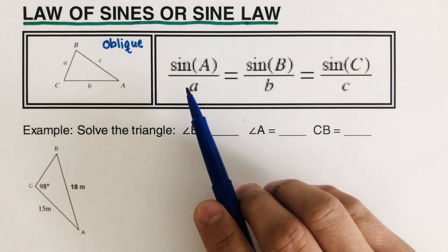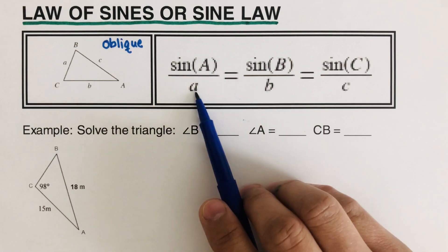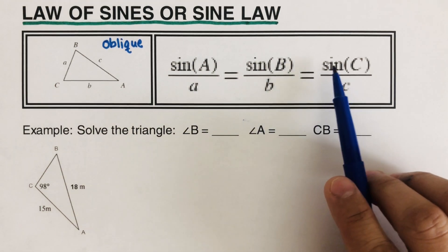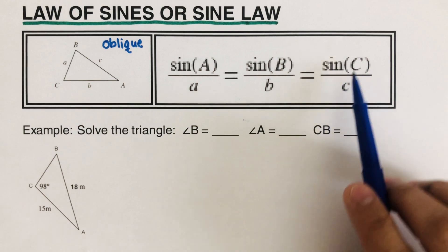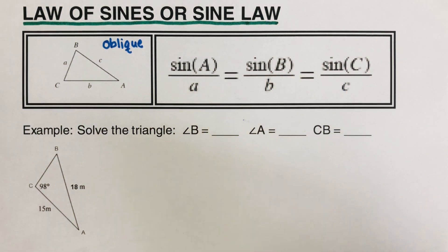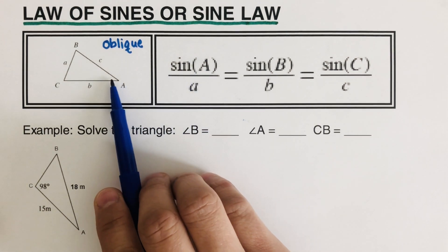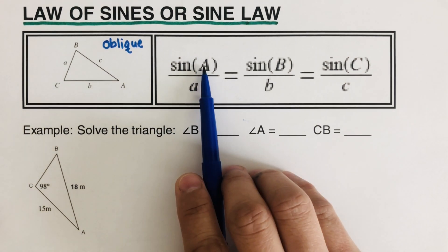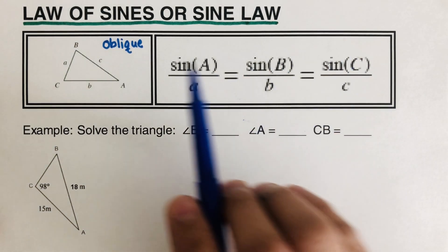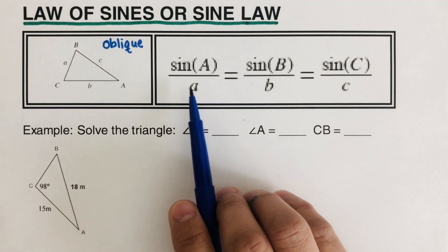This is the equation we have: sine of angle A over a equals sine of angle B over b equals sine of angle C over c. The big letters are the angles — so this is sine of angle A, for example — and the small letters are the sides across from those angles.